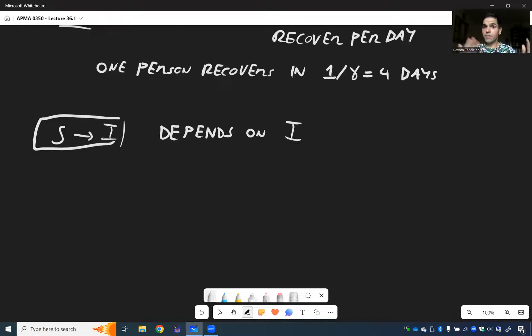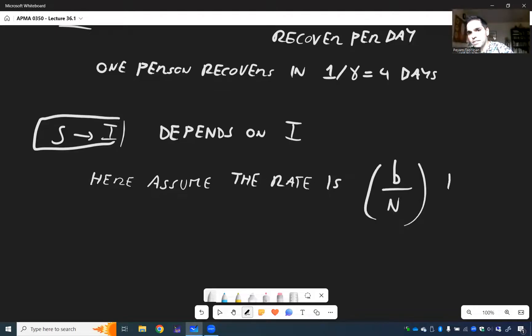And in fact, we assume that this rate will be some number B over N times I, which I explain now. So now let's look back at S goes to I. So again, this depends on I, because the more infected people there are, the bigger the turnaround rate.